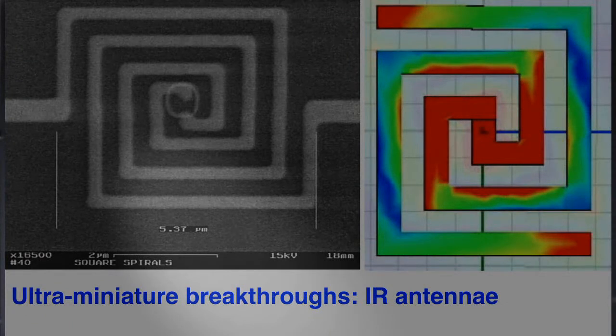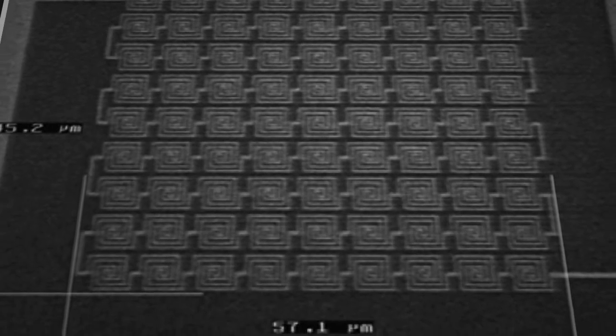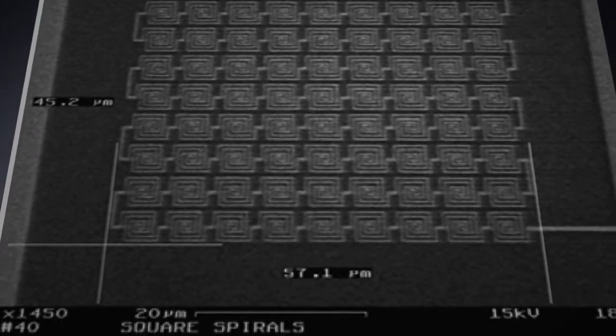For those who understand the dimensions, the wavelength of this is about 20 micrometers. Remember that your cell phone is dealing with centimeter wavelengths, several centimeters. This is at the level of tens of micrometers, so it's orders of magnitude less. And already there's progress.